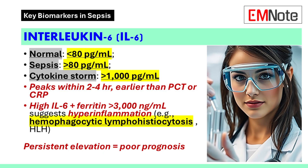Interleukin-6 is a cytokine involved in the acute phase response to infection. Normal levels are typically less than 7 picograms per milliliter, but in sepsis, levels can exceed 80 picograms per milliliter. During a cytokine storm, levels may exceed 1,000 picograms per milliliter.